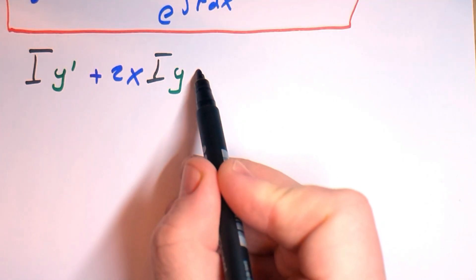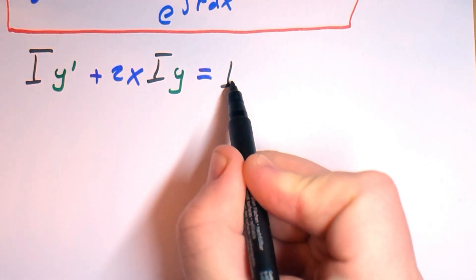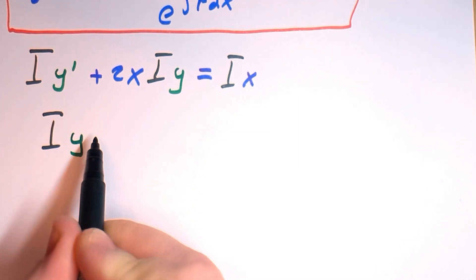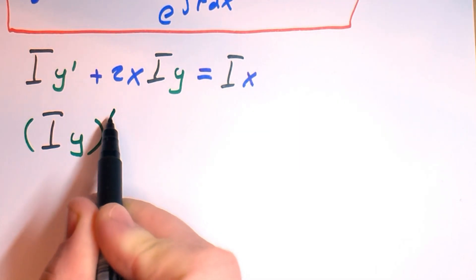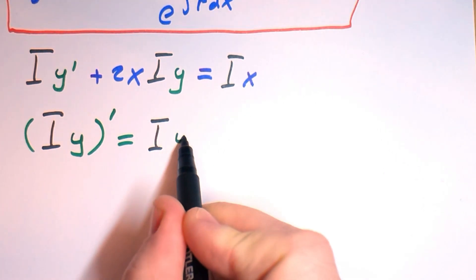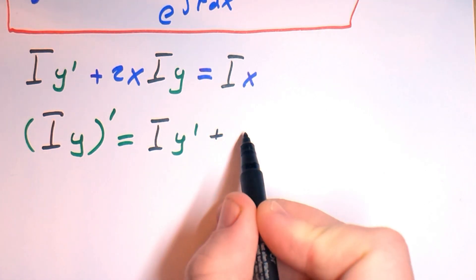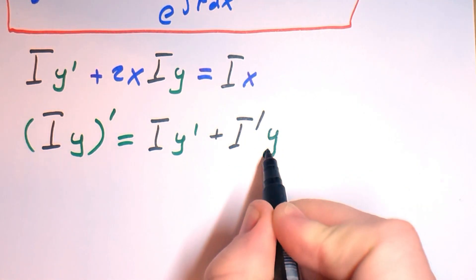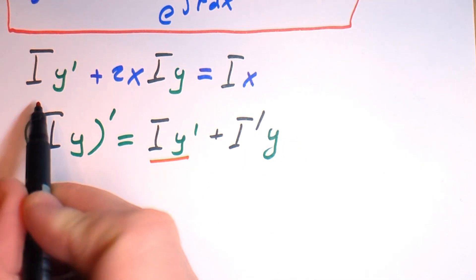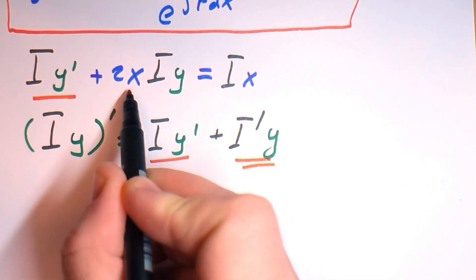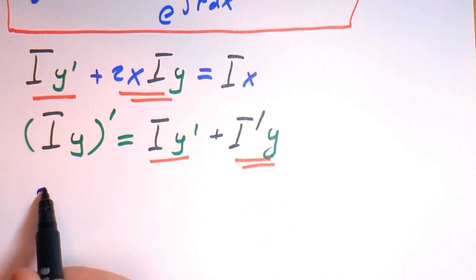So let's multiply left and right part by integration factor and write Iy' plus 2xIy equals Ix. And from the product rule we know that the derivative of yI is equal to Iy' plus I'y.